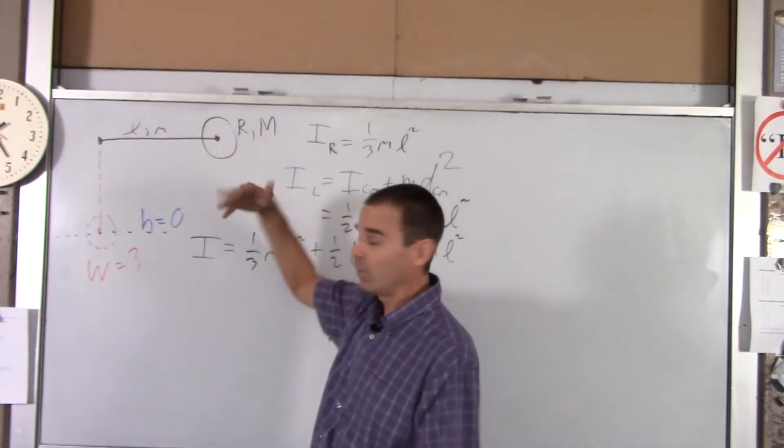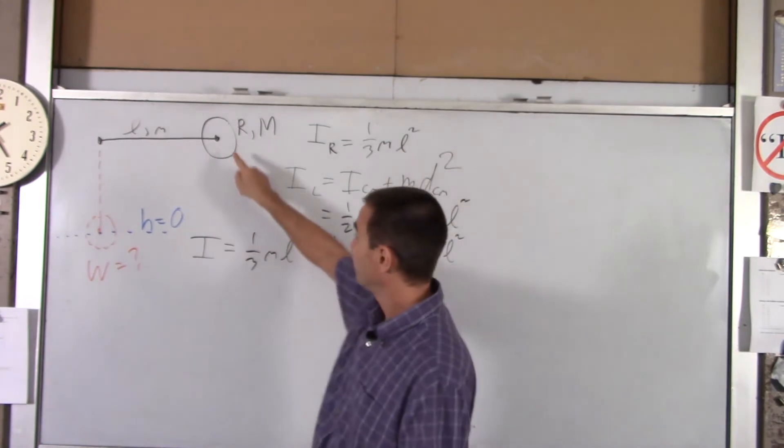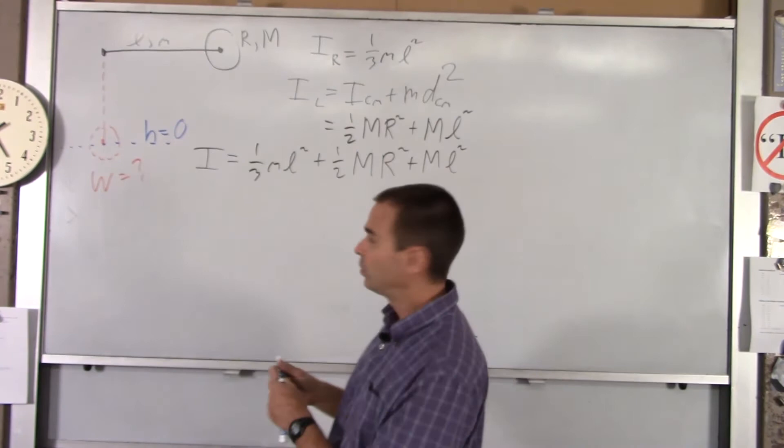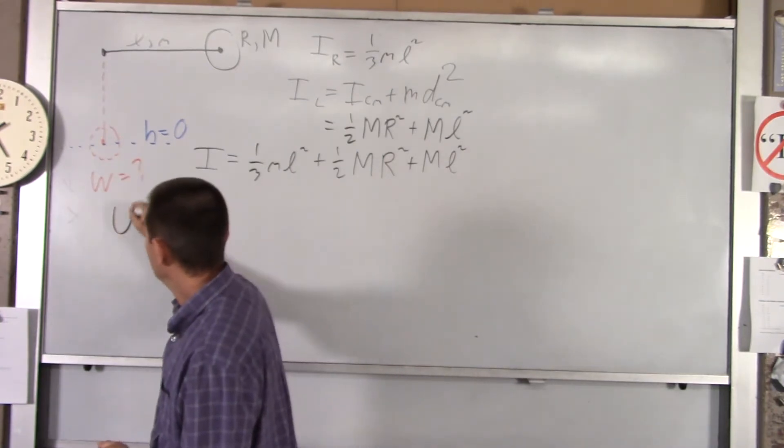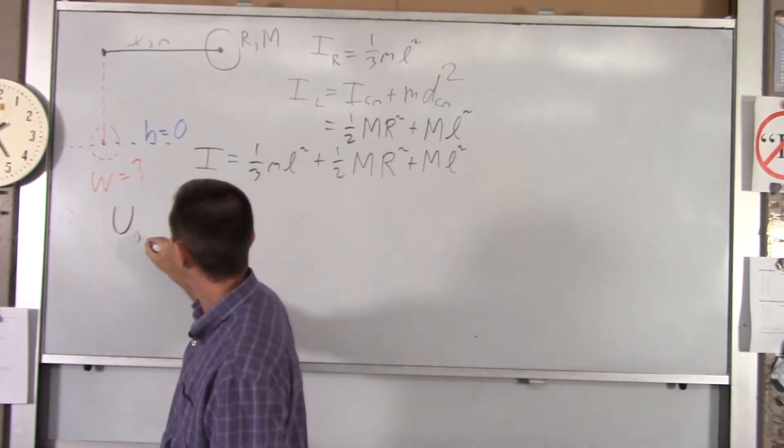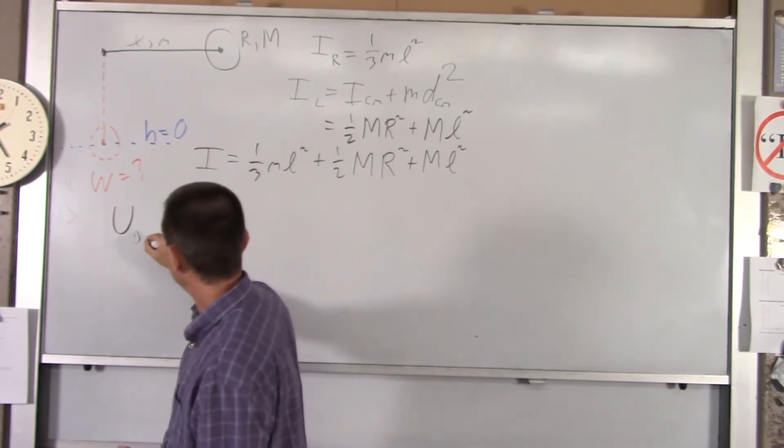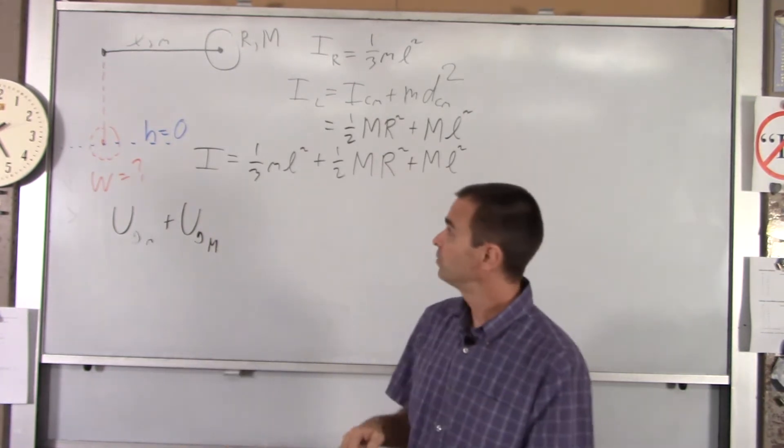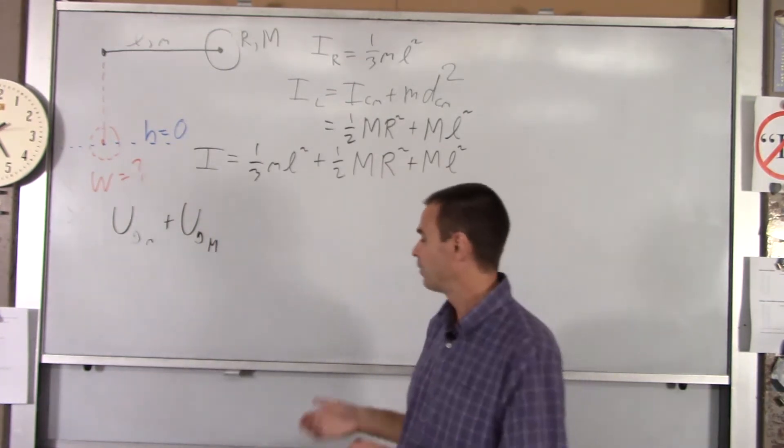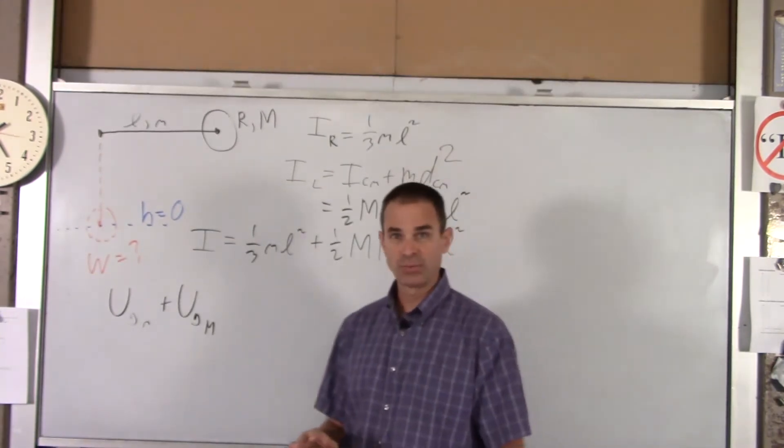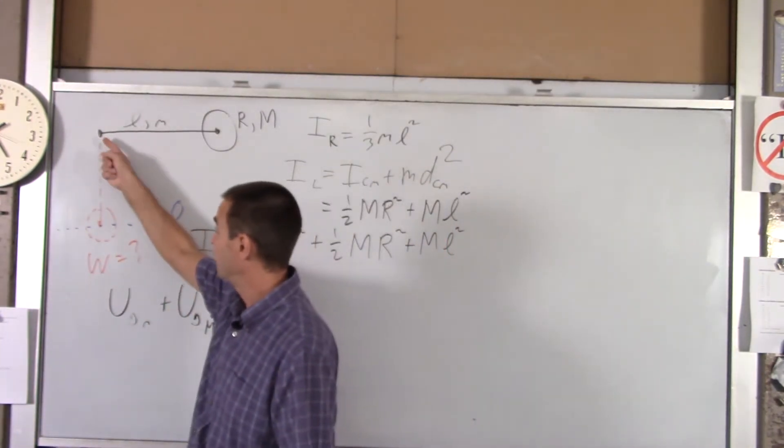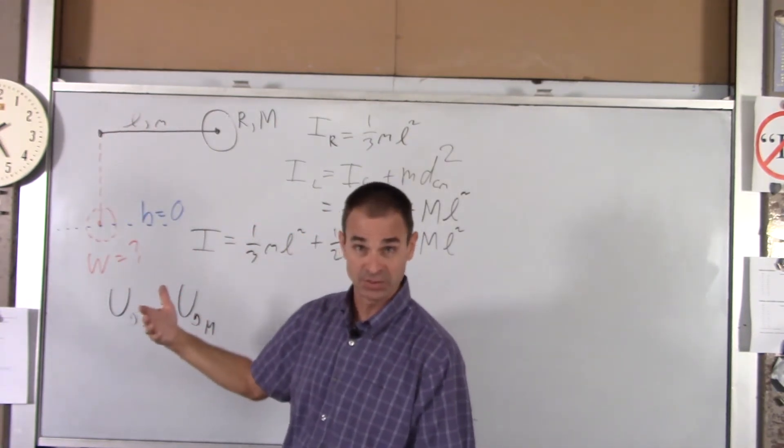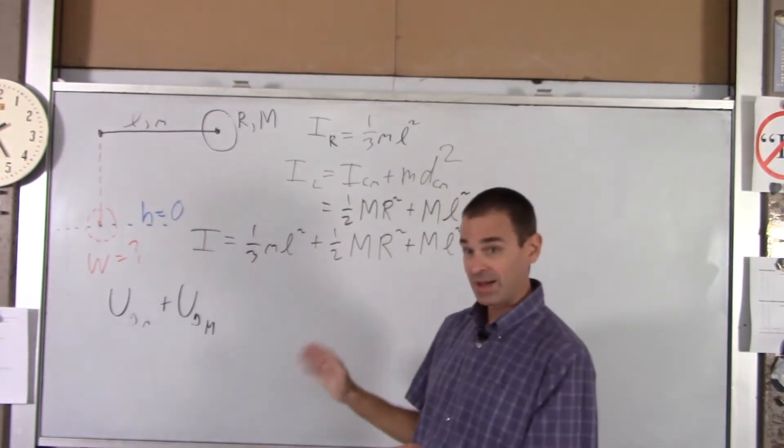At point 1, we've only got gravitational potential energy, but both the lollipop and the lollipop stick each have potential energy, so I'll write those as two separate terms. We've got gravitational potential energy of little m plus gravitational potential energy of big M. There is no non-conservative work being done. There is a non-conservative force acting at the pivot point, but that doesn't do any work because it doesn't act through any distance. So there's no non-conservative work here.